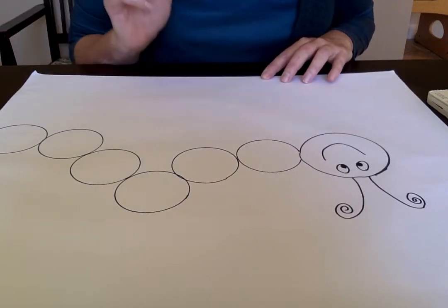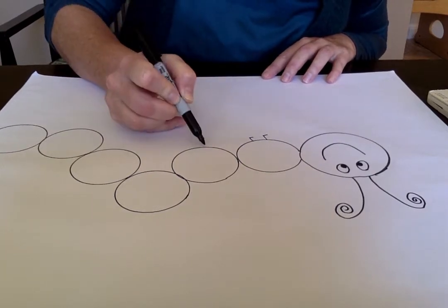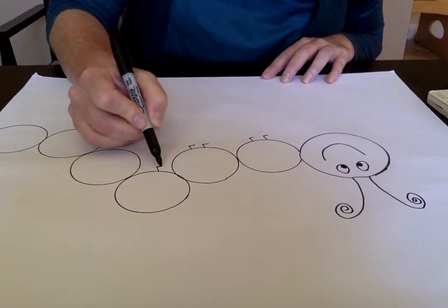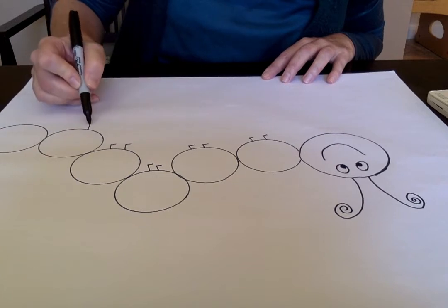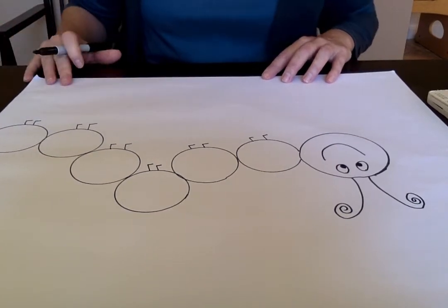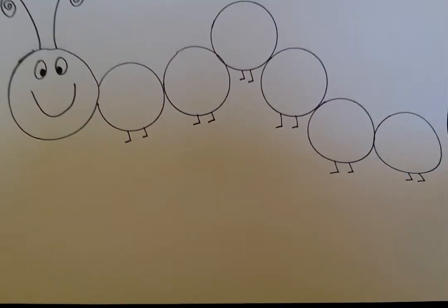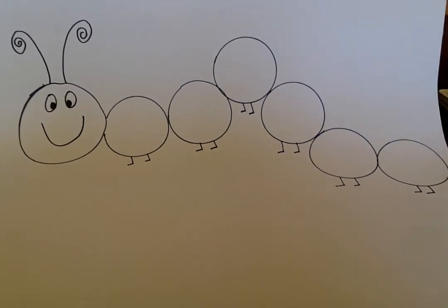And now I'm going to give him some little feet. I don't need any feet on the head, right? Just on his body. So for his feet, I'm just making backwards L's. There you go. Now you have a very hungry caterpillar of your own.